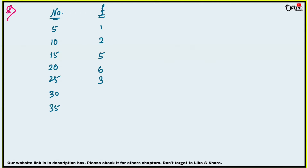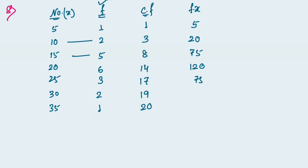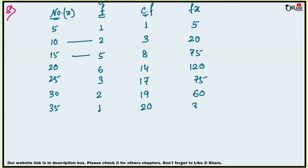The cumulative frequencies are: 1, 3, 8, 14, 17, 19, 20. So n equals 20. Next, find fx (frequency times variate): 5×1=5, 10×2=20, 15×5=75, 20×6=120, 25×3=75, 30×2=60, 35×1=35. The summation of fx equals 390, and summation of f equals 20.